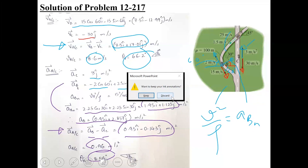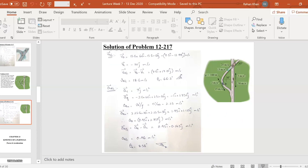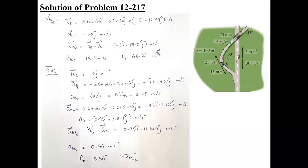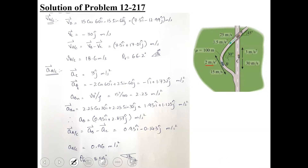Regarding aB_normal: since car B is traveling along a curved path, the total acceleration has two components. The tangential component is given as 2 meters per second squared, directed along the tangent.